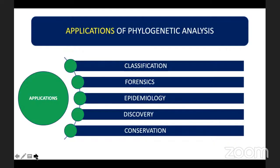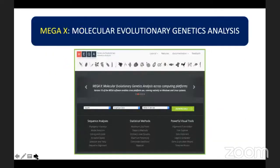Now I will introduce an open-source bioinformatics software that can be used for molecular phylogenetic analysis. MEGA X, or Molecular Evolutionary Genetics Analysis, is an integrated bioinformatics pipeline used for multiple sequence alignment of DNA or protein data to infer evolutionary relationships through phylogenetic analysis. This software can be easily downloaded from the internet.